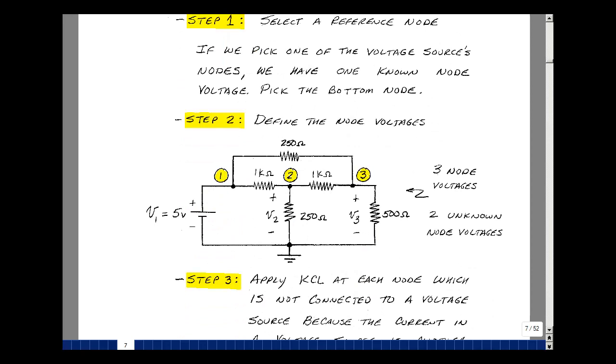The second step in the algorithm is to define the node voltages. So I'll call this node voltage 1, node voltage 2, and node voltage 3, and I'll label that V1, V2, and V3, plus sign by the node voltage and the minus sign by the ground symbol. Again, I have three nodes, but I know one of the three node voltages. So I just have to solve for two unknown node voltages.